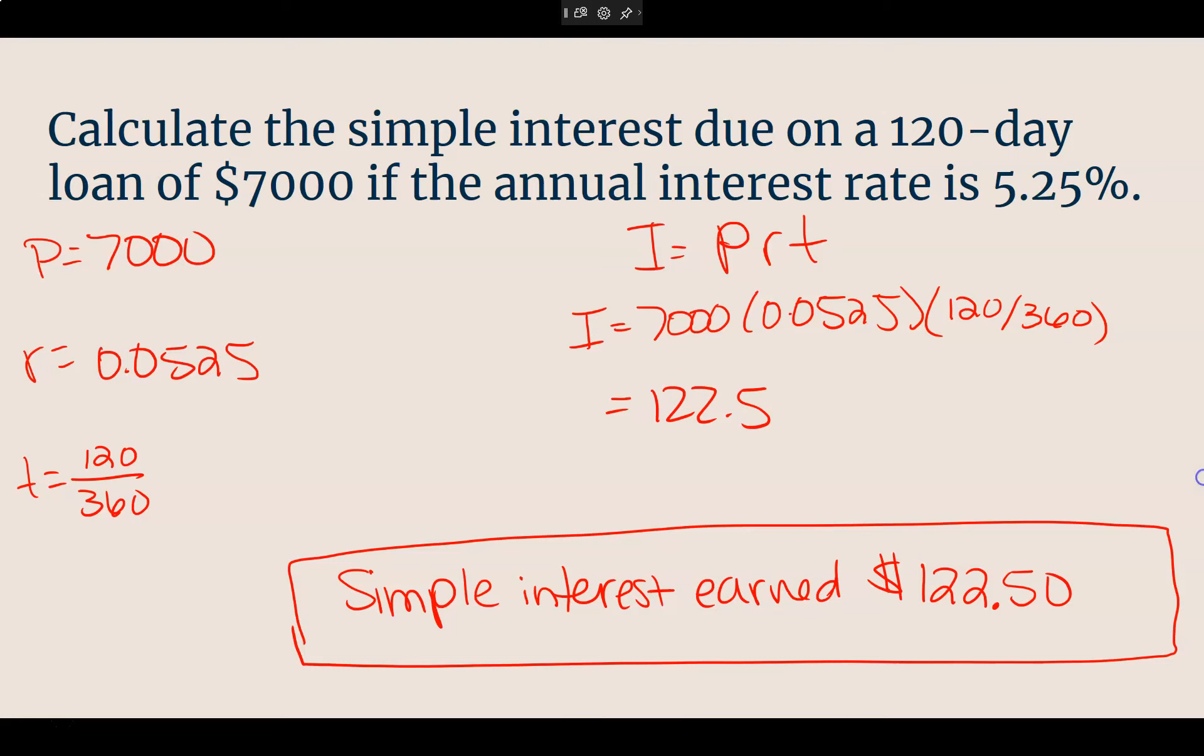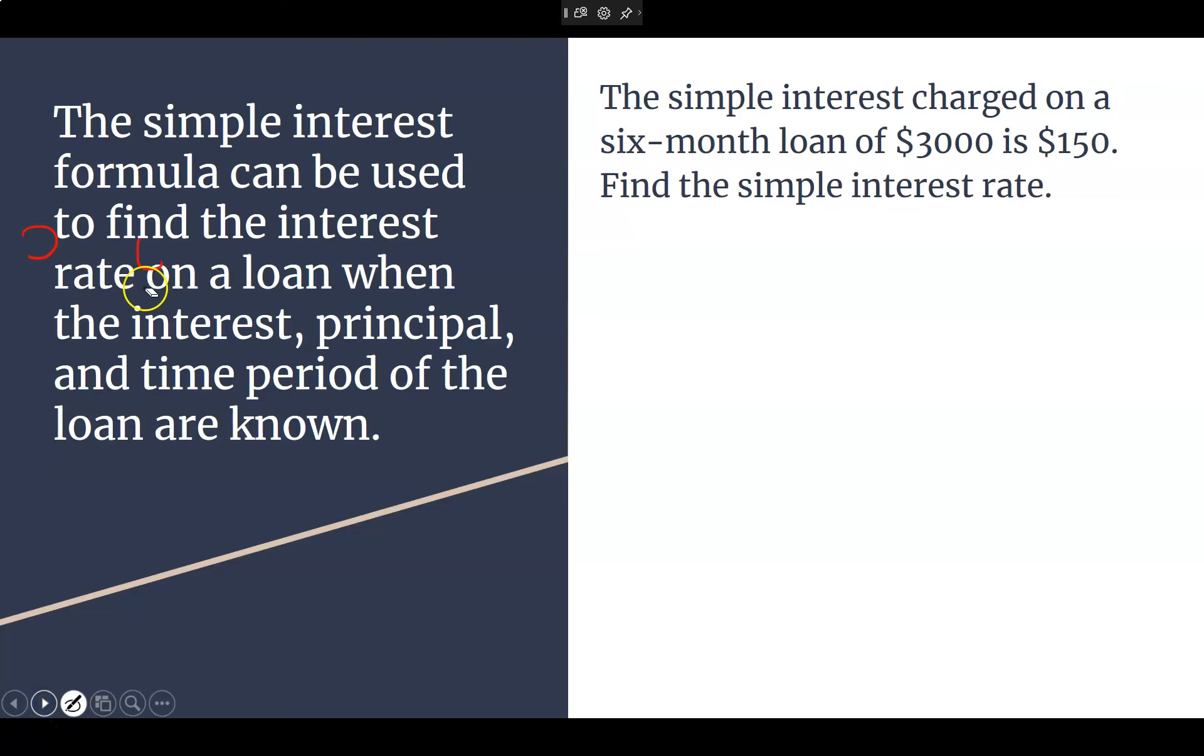Our next one, we're going to change it up a little bit. The next one, we're using the same formula, but we're actually being asked for something different. We're asking now. We don't know what the rate is. So we have everything else. I know what the interest earned was. I know what my principal amount is going to be. I know how long it took me to get it, but I don't know what the actual rate was. So we're going to use the same formula to find my R.